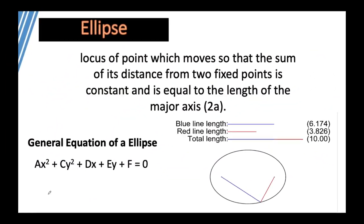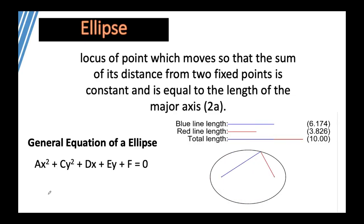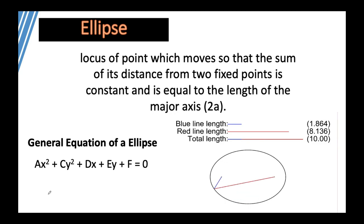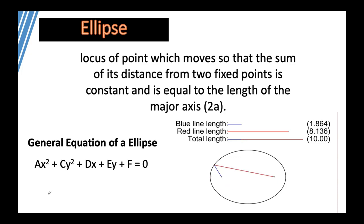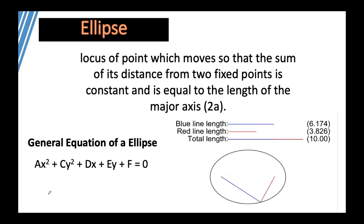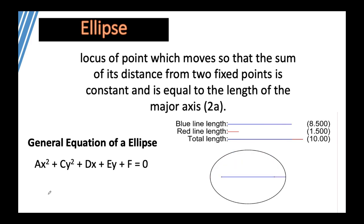Hello guys, welcome back. We will be learning the third conic section — this time we have the ellipse. Ellipse is defined as the locus of points, or collection of points, which moves so that the sum of its distance from two fixed points is constant and is equal to the length of the major axis.